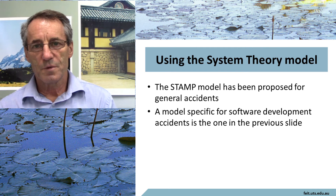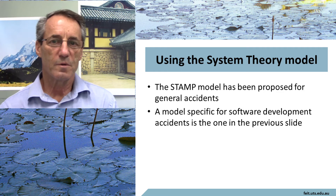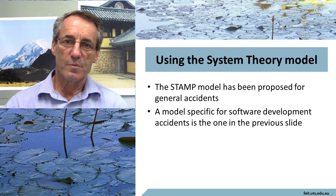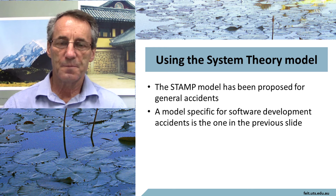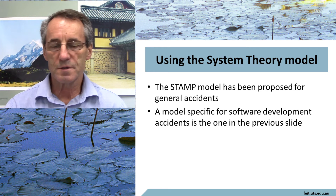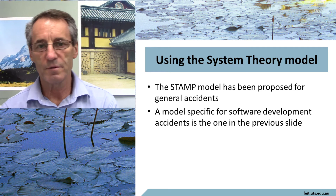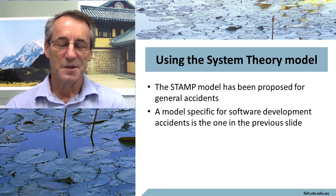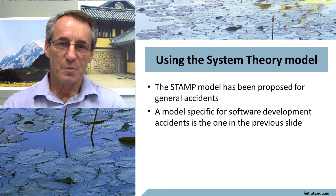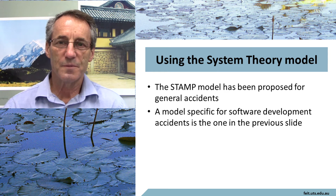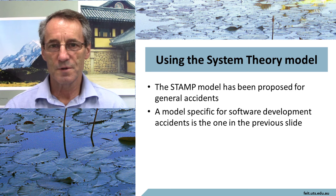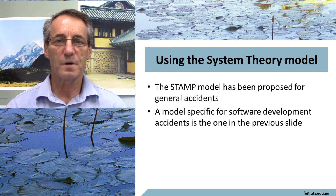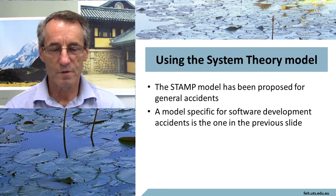If you're going to investigate something, how do we use the system theory model? Nancy Leveson has proposed a system theory model for investigating accidents, mostly military accidents, where say two helicopters collide or there's a friendly fire incident or something of that nature. Her model is called STAMP. Personally, I'm more interested in the unexpected outcomes of software development projects, so I would tend to use the one that I've proposed.